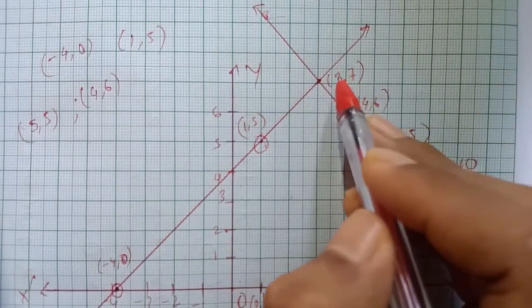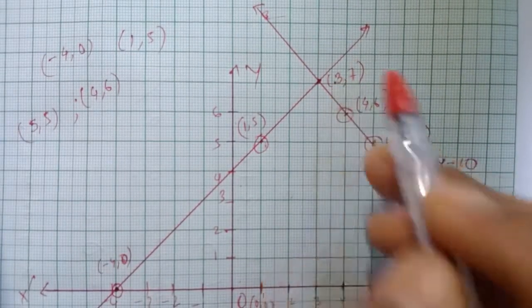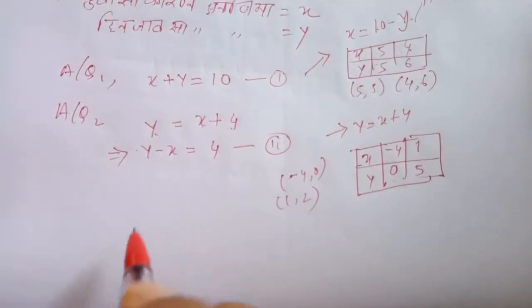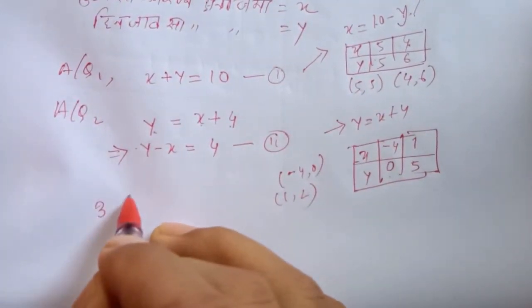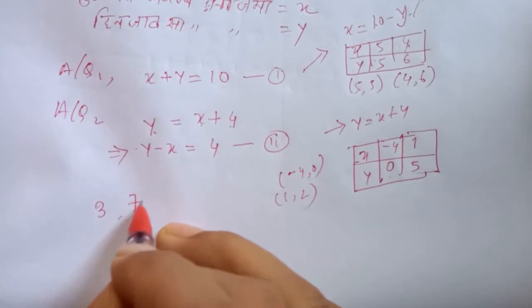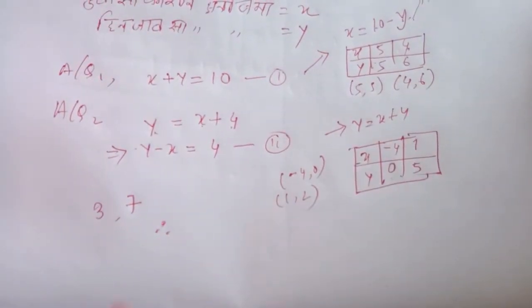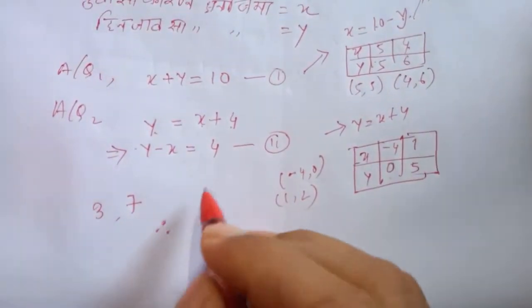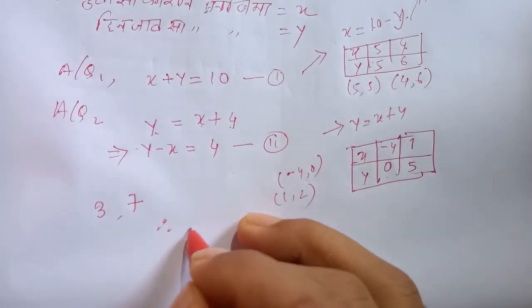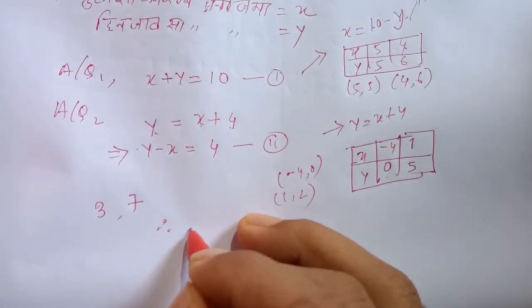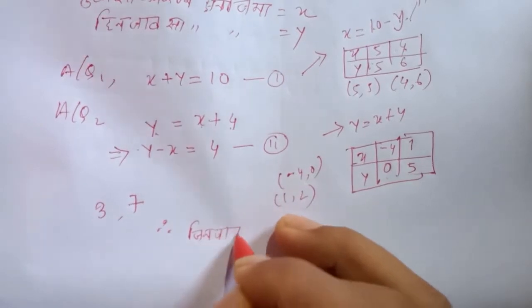So this is the solution. The solution is x equals 3, and x equals 3, so x equals 3 and the graph is 7. Therefore x — therefore.